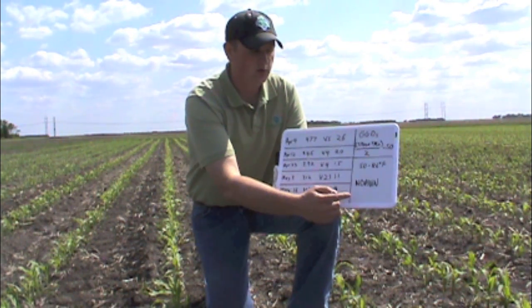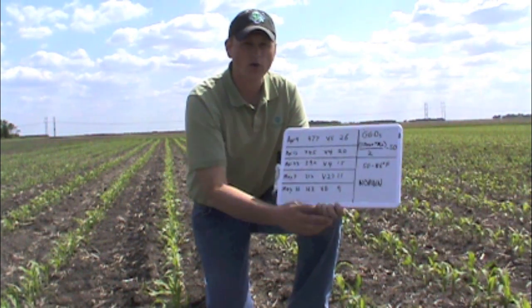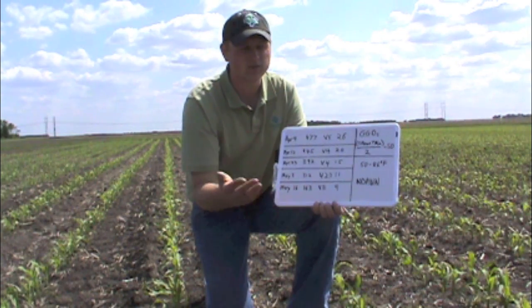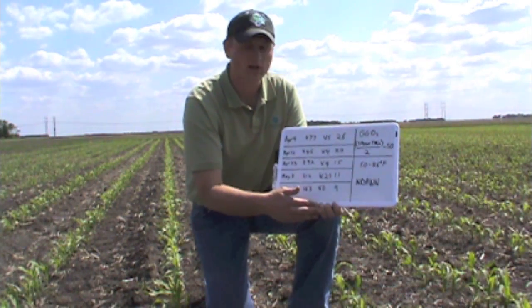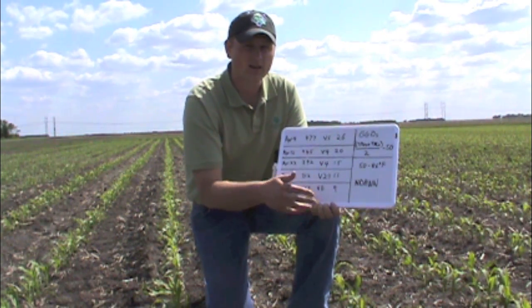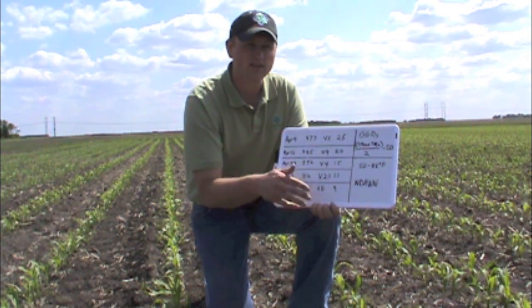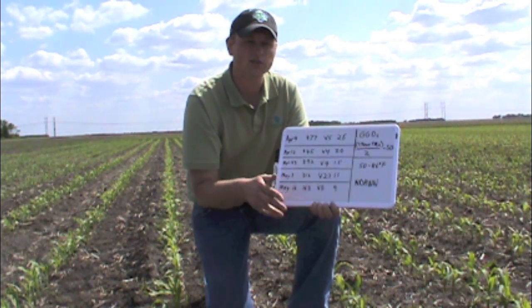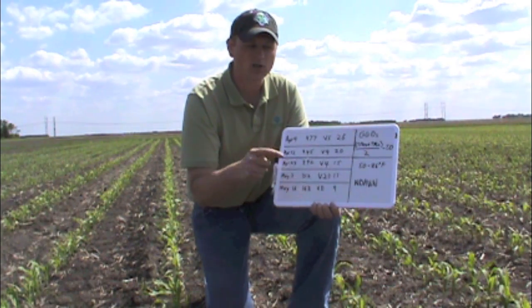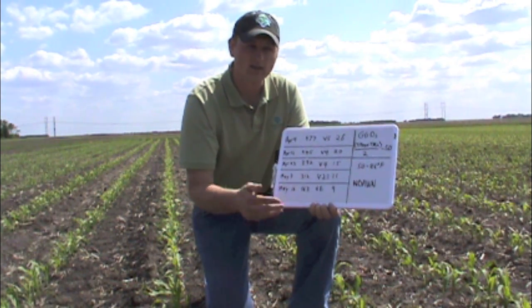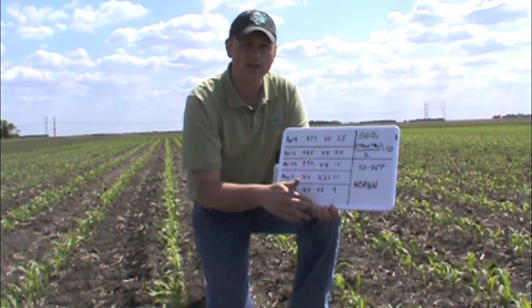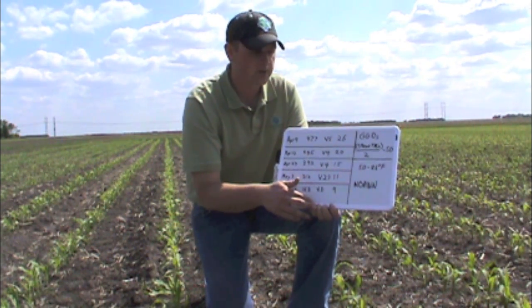The easiest way is to go to the North Dakota Ag Weather Network, the NDAWN. If you just Google NDAWN it'll come up. Go to that website and you can pick a station nearest you, put in your planting date, and it'll show the accumulated growing degree days for your area.